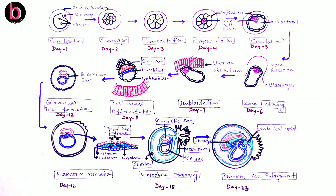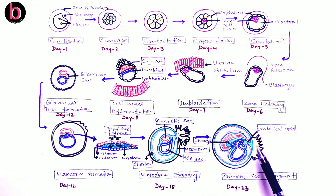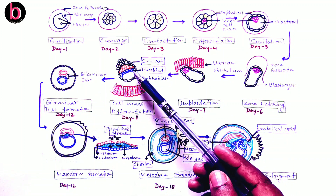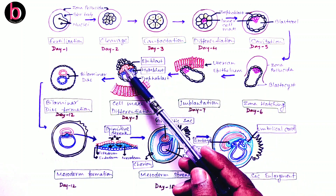The trophoblast differentiates into two layers: the outer layer is known as syncytiotrophoblast, while the inner one is known as cytotrophoblast. These two trophoblast layers are later responsible for formation of a number of finger-like projections known as chorionic villi. These finger-like projections are later responsible for development of the placenta.